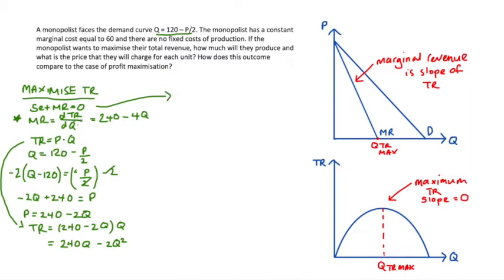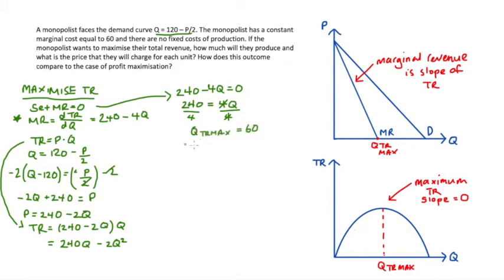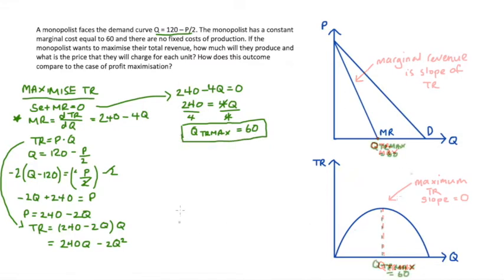Now recall that we want the point at which marginal revenue equals zero. Substituting in 240 minus 4Q for marginal revenue, we get the condition: 240 minus 4Q equals 0. Adding 4Q to both sides gives 240 equals 4Q. Dividing both sides by 4, we get Q equals 240 over 4, which equals 60. The quantity that maximizes total revenue is 60.